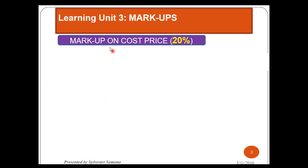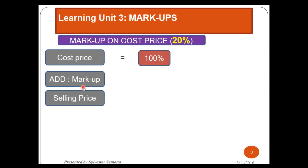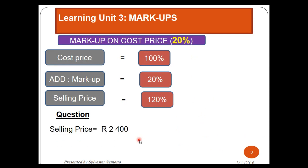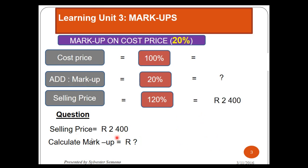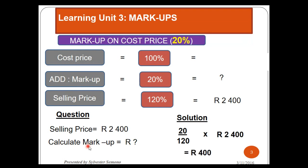Now let's still look at markup on cost, but with a different question. The analysis stays the same — it won't change. But I changed the equation a bit. Now I gave a selling price of 2,400 and I say, please find the markup. So the question mark will be on the markup. I put 2,400 on the selling price. When I come to look for the fraction, where I put the question mark, that percentage will be on top. Where I put the amount, that percentage will be at the bottom. So on top I've got 20 because I'm looking for the markup, and I divide by 120 because I've been given the selling price, then multiply by 2,400, and I get 400 as my markup.